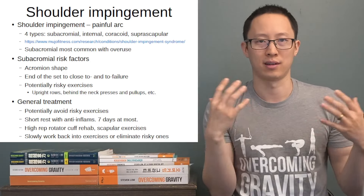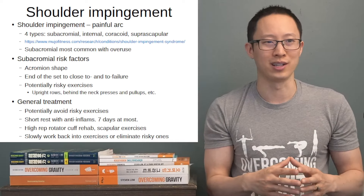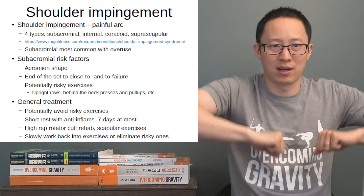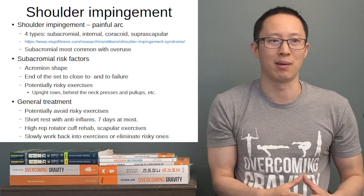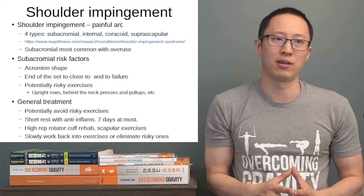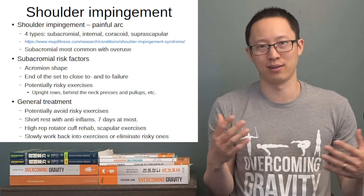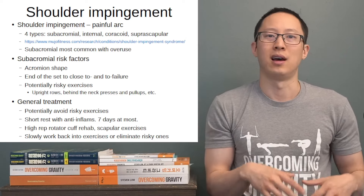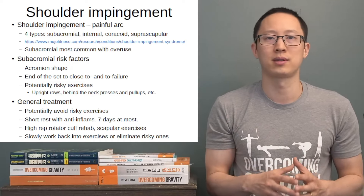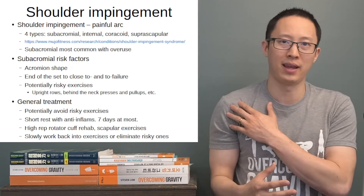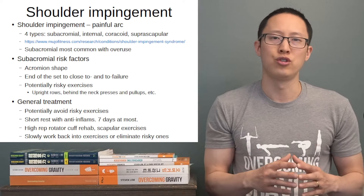Some exercises are potentially risky — upright rows and behind-the-neck pull-ups and presses can put the shoulder in a potentially risky position. An externally rotated and abducted position is very unstable for the shoulder, requiring more rotator cuff control, which means it can fatigue sooner and get injured more easily. With upright rows, going up close to failure can cause more mechanical rubbing in that position.